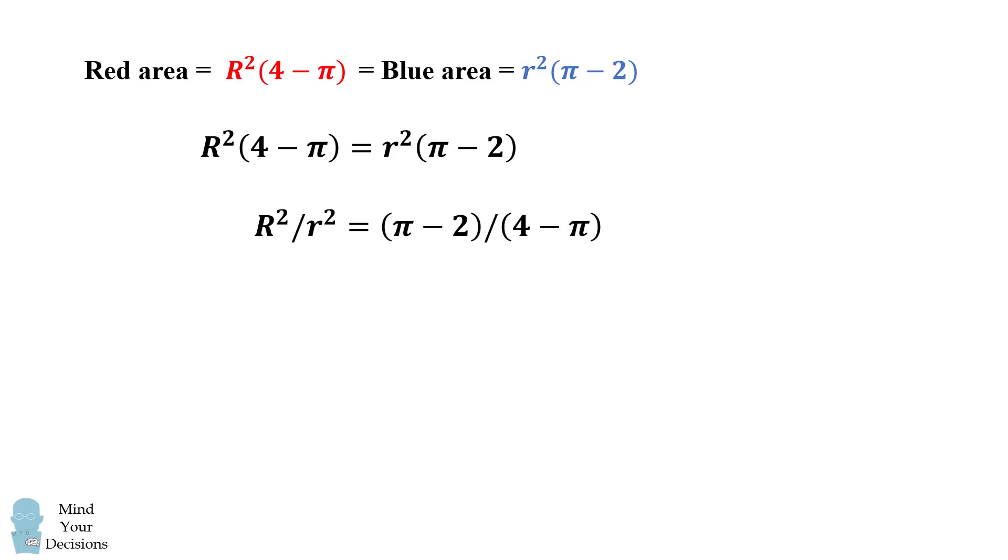We then take the square root of each side to get that the large circle's radius divided by the small circle's radius is equal to the square root of the quantity pi minus 2 all over 4 minus pi. And this is approximately 1.153.